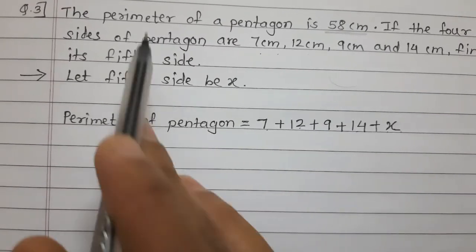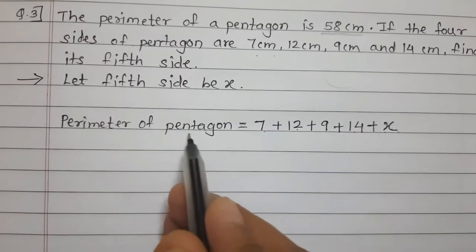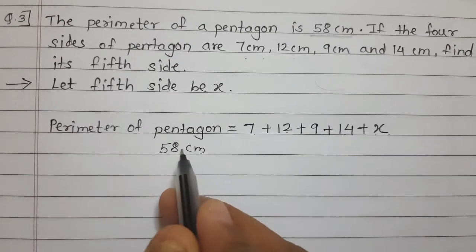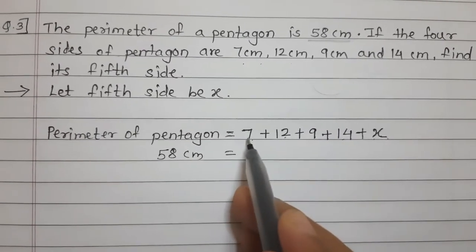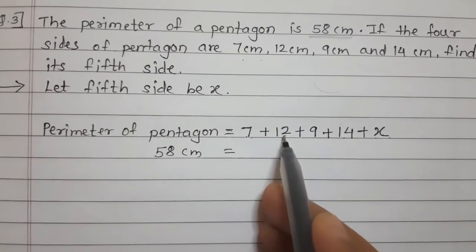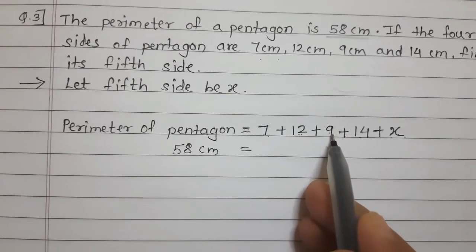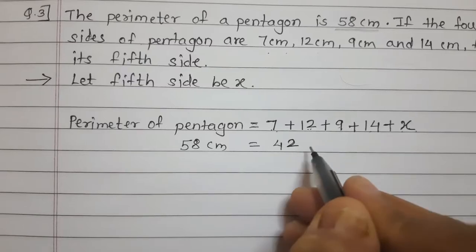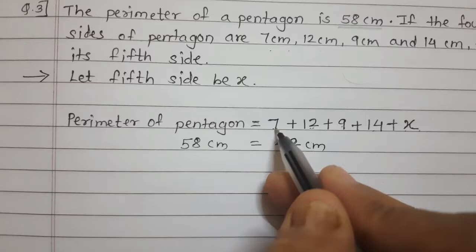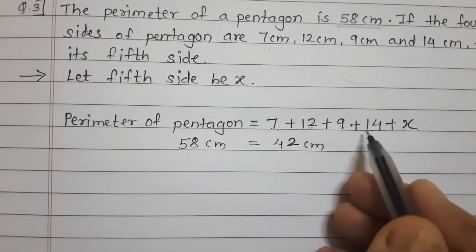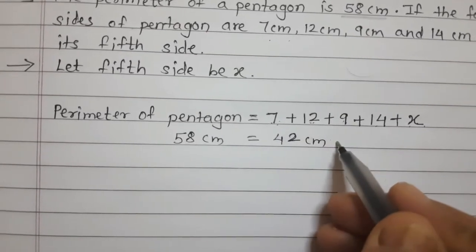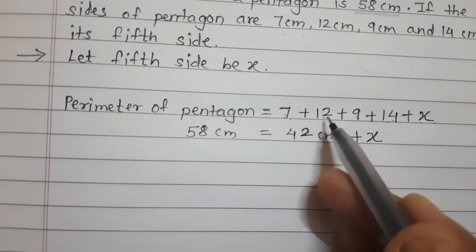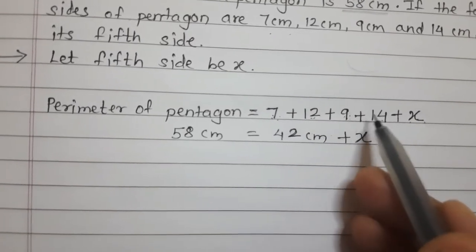Perimeter of pentagon is given as 58 cm. So: 58 = 7 + 12 + 9 + 14 + X. Finding the sum of the four known sides: 7 plus 12 is 19, plus 9 is 28, plus 14 is 42. So we have 58 = 42 + X.